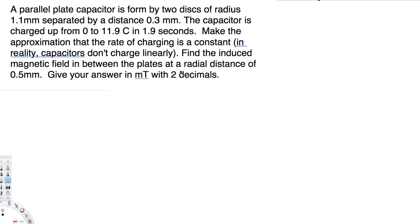The capacitor is charged up from 0 to 11.9 coulombs in 1.9 seconds. Make the approximation that the rate of charging is a constant. Find the induced magnetic field in between the plates at a radial distance of 0.5 millimeter. Give your answer in millitesla with two decimals.